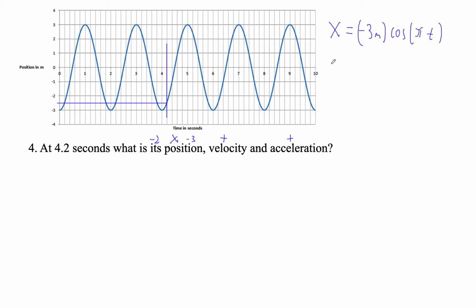And our velocity is, and then we just take basically the derivative of that, right? So that becomes positive, sorry, the derivative is some calculus thing, right? 3 pi sine pi t. Those are the formulas that we came up with. And this guy's positive.